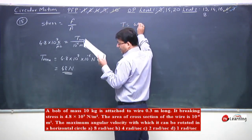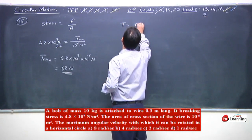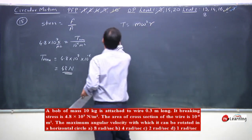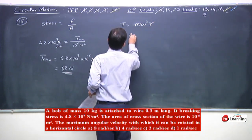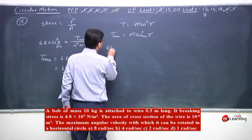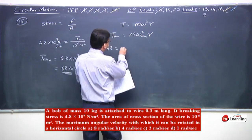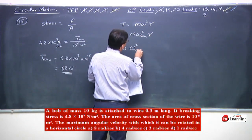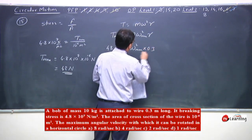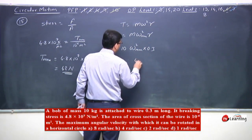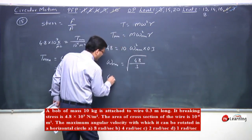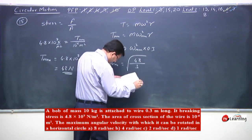That tension must equal the centripetal force: T = mω²r. So T_max = mω²_max × r. Substituting 48 N for T_max, 10 kg for mass, and 0.3 m for r: ω²_max = 48 / (10 × 0.3) = 48/3 = 16, so ω_max = 4 radian per second.